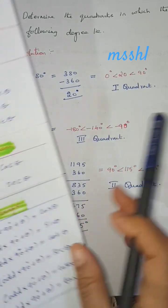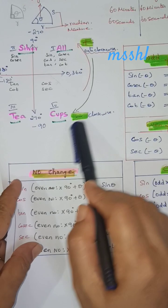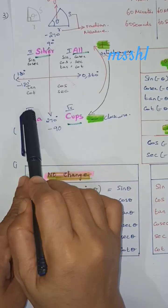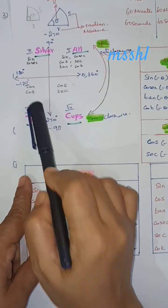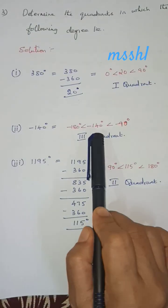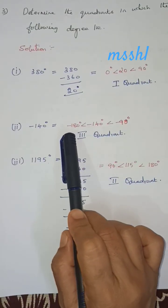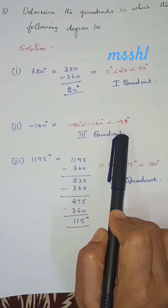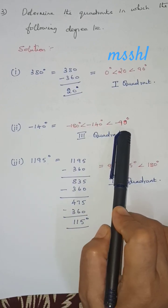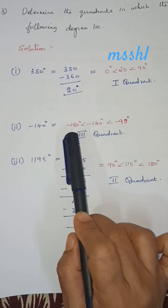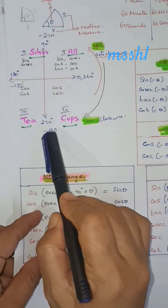Next, minus 140. In the clockwise direction, going from minus 90 to minus 180. So minus 140 lies between minus 180 and minus 90. Minus 90 is the bigger number and minus 180 is the smaller number. So minus 140 lies in the 3rd quadrant.